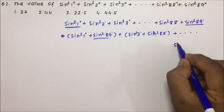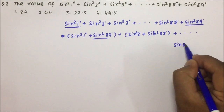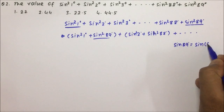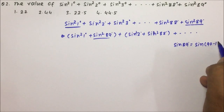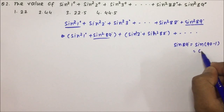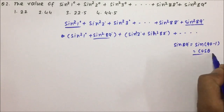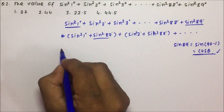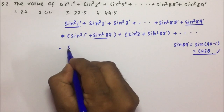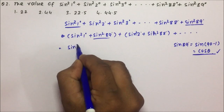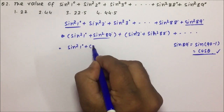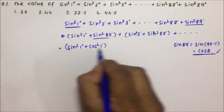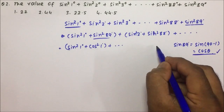Sin 89 degree — how can we write it? Sin(90 − 1) degree. So sin(90 − θ) will be equal to cos θ. Please watch the previous video to understand more. So this I can write as sin²1° + cos²1°. Like this, we can proceed.